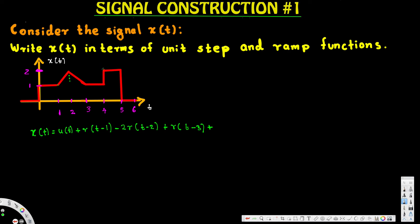The last two terms: there is a unit step function here because we have a direct jump. It starts from one, so it's u(t - 4), shifted four units to the right. After it reaches five it's dropping down, so we put a negative sign. This is also a unit step function but it's going down from two, so we put -2u(t - 5).